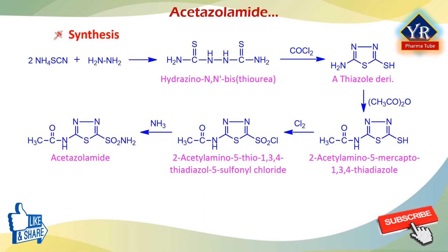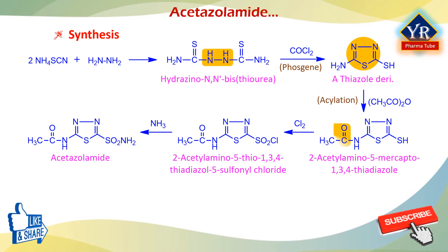Acetazolamide is synthesized by the reaction of ammonium thiocyanate and hydrazine, forming hydrazino-N,N-bisthiourea, which cyclizes into a thiadiazole upon reaction with FAS gene. Then, thiadiazole acetylation with acetic anhydride gives 2-acetylamino-5-mercapto-1,3,4-thiadiazole. The obtained product is chlorinated to give 2-acetylamino-5-thio-1,3,4-thiadiazole-5-sulfonyl chloride, which is then converted into acetazolamide upon reaction with ammonia.